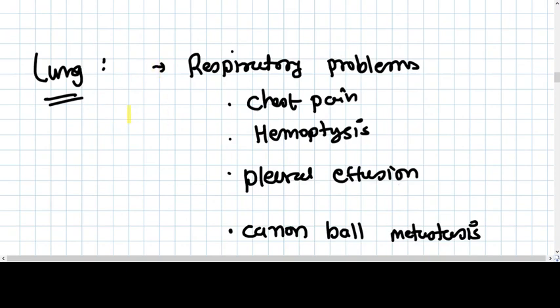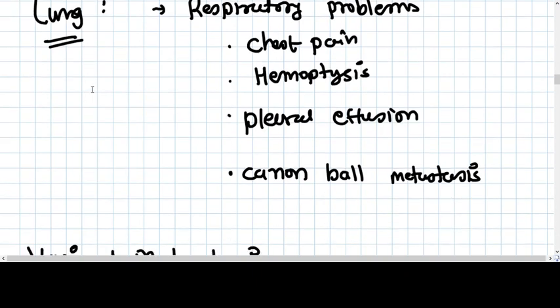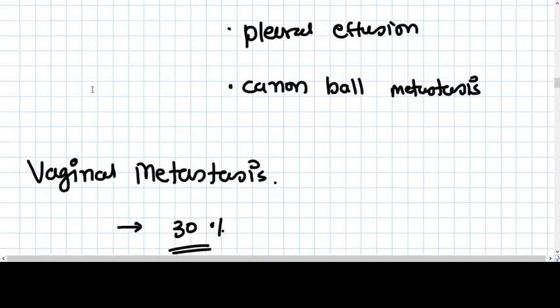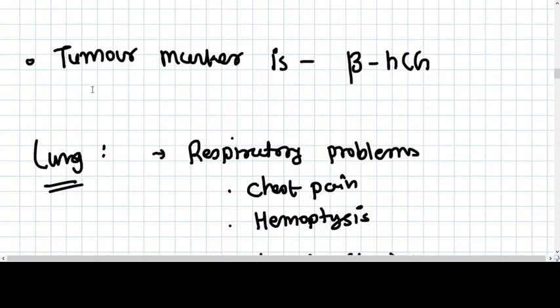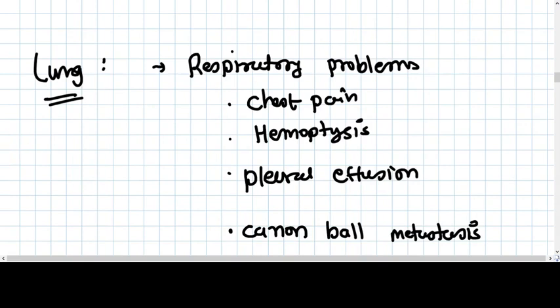If it is metastasized to the lung, then respiratory problems are there: chest pain, hemoptysis, pleural effusion. Metastases can be seen on the x-ray. Vaginal metastasis is seen in 30% cases: purple hemorrhagic projection, highly vascular, bleeding on touch. Lung metastasis is seen in 80% of cases, so lung metastasis is so common.